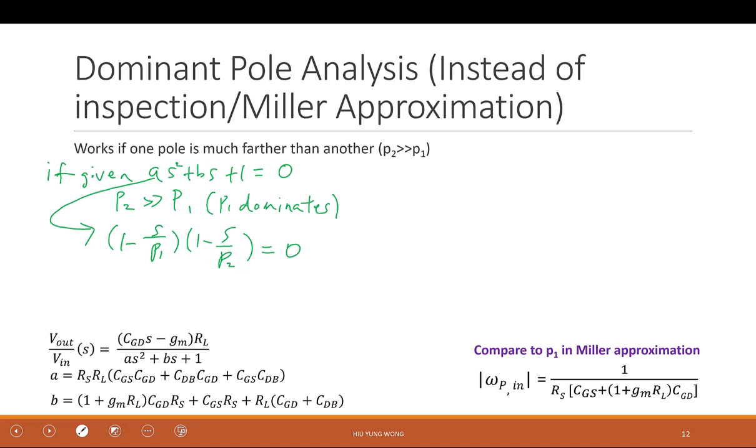So I can do this. So then I expand this one. It becomes 1 minus 1 divided by P1 plus 1 divided by P2 times S plus S squared divided by P1 P2 equals to 0.